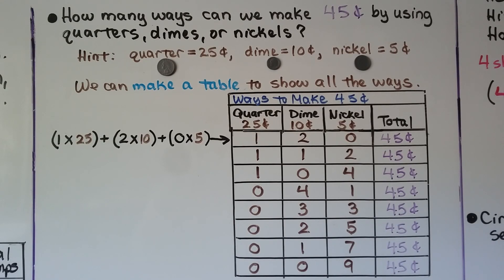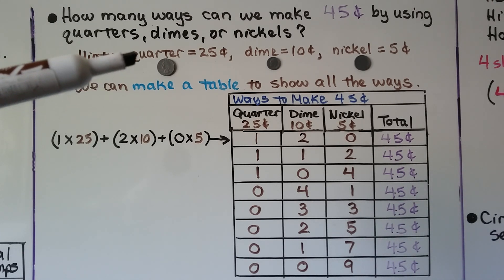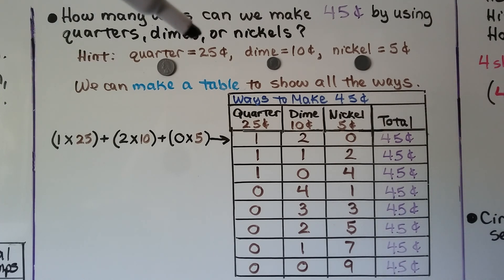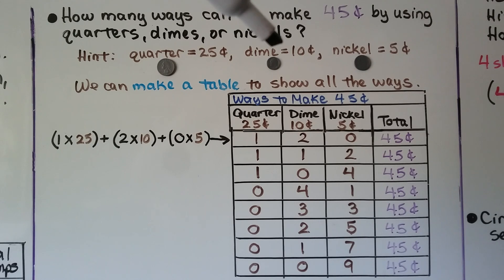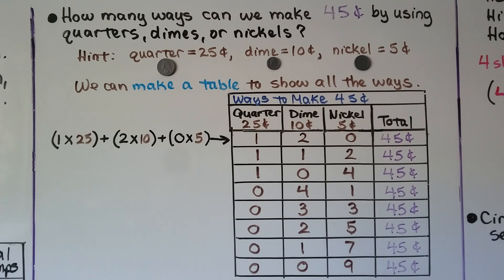How many ways can we make 45 cents by using quarters, dimes, or nickels? Remember, one quarter is worth 25 cents, one dime is equal to 10 cents, and one nickel is equal to 5 cents. So we can make a table to show all the ways to make 45 cents.